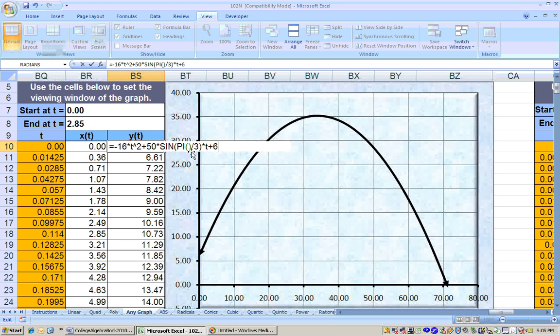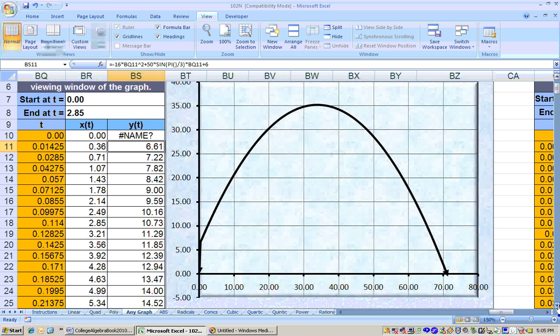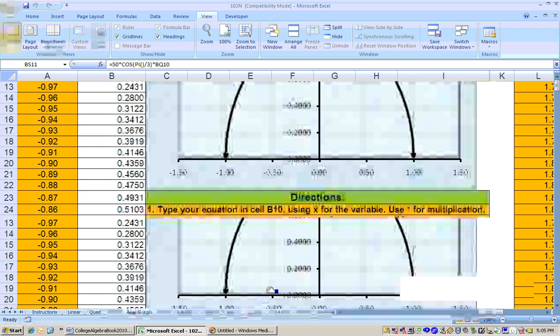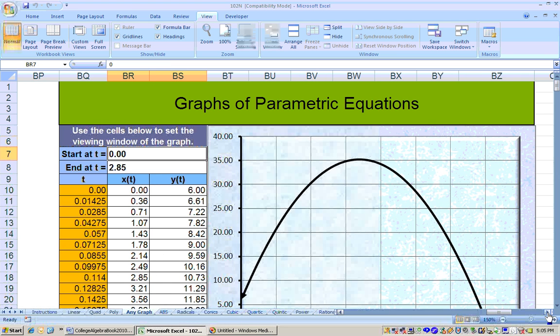And then the other one I just typed in equals 50 times cosine, open parenthesis, pi, open parenthesis, closed parenthesis, divided by 3, closed parenthesis. Or you could work out these sines and cosines separately and then just type in the numerical values. So once you type those in and click the click here to get graph button.